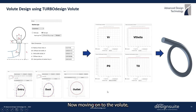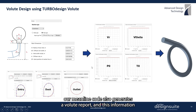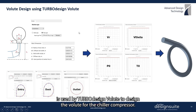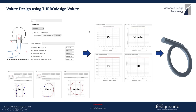Now moving on to the volute, our mean line code also generates a volute report, and this information is used by Turbo Design Volute to design the volute for the chiller compressor.